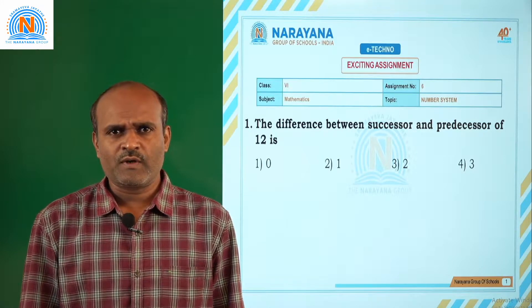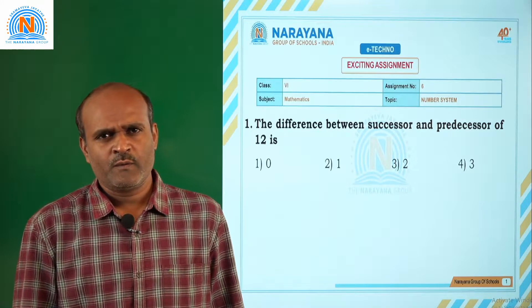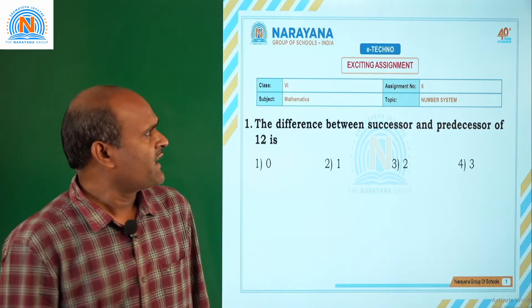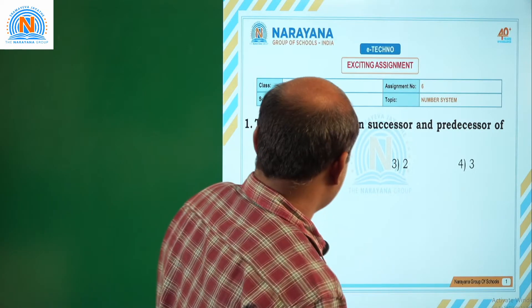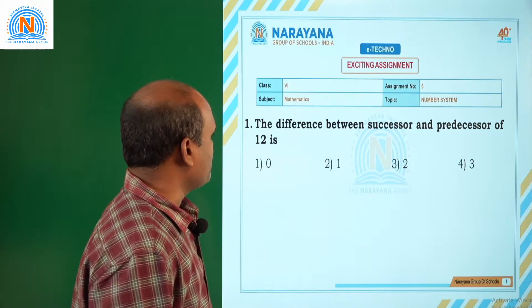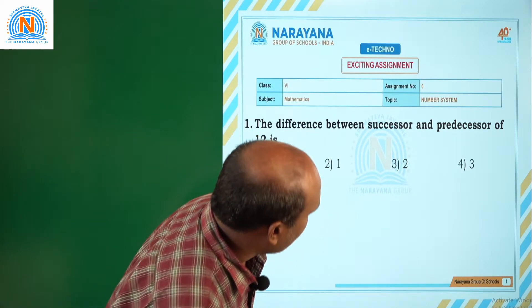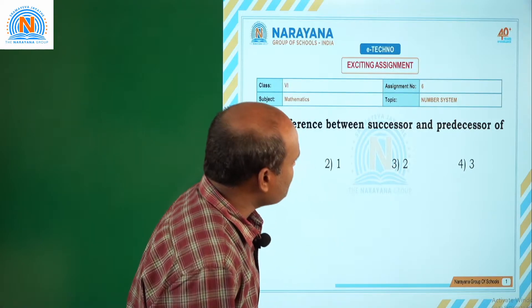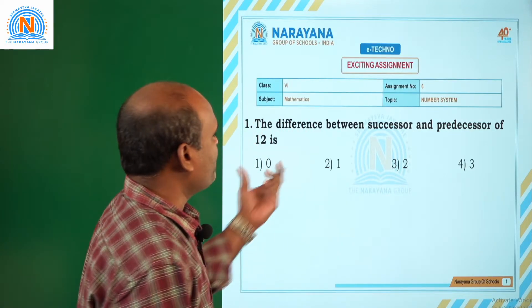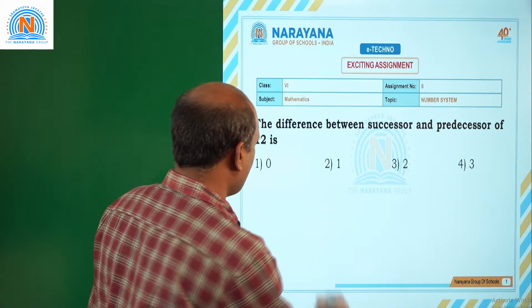Hello students, welcome to Narayana Live Classes. Today we are discussing sixth class Mathematics assignment number 6. Here going to the first question: the difference between successor and predecessor of 12 is.